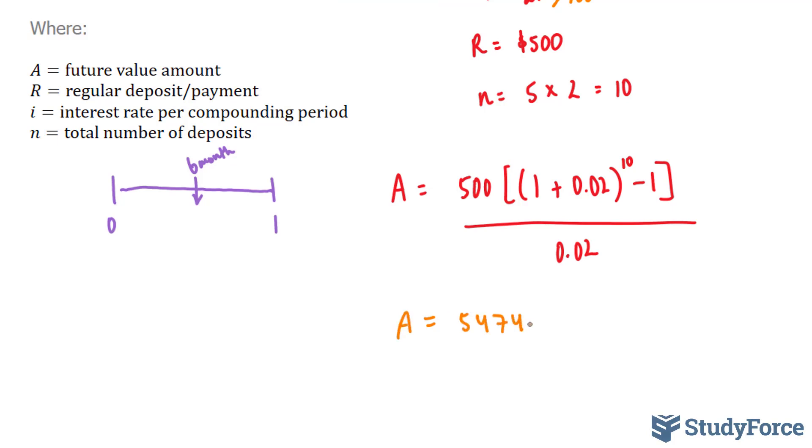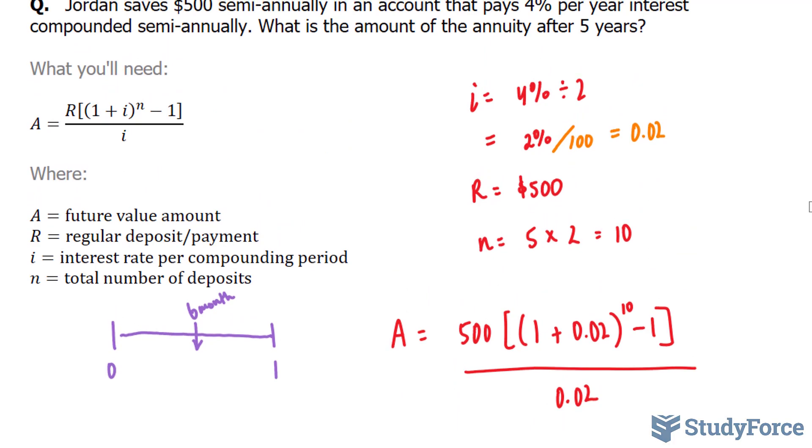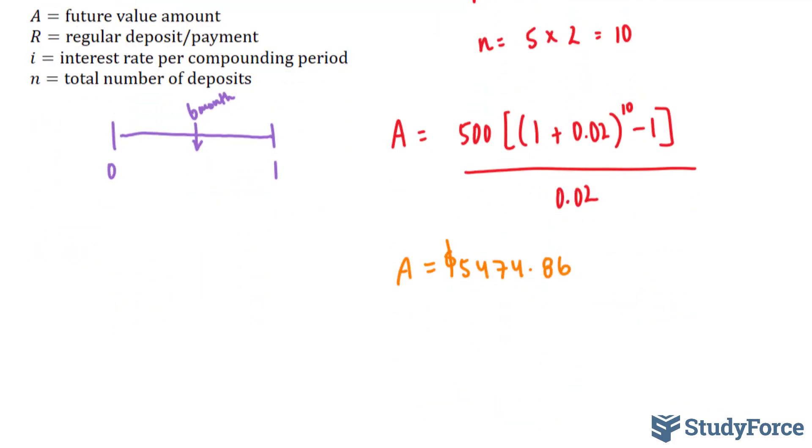5,474.86 dollars. So let's interpret this. What is the amount of the annuity after 5 years? Well, after 5 years of constantly depositing $500 every 6 months, he will end up with $5,474 and some change given the interest rate that he has been given.